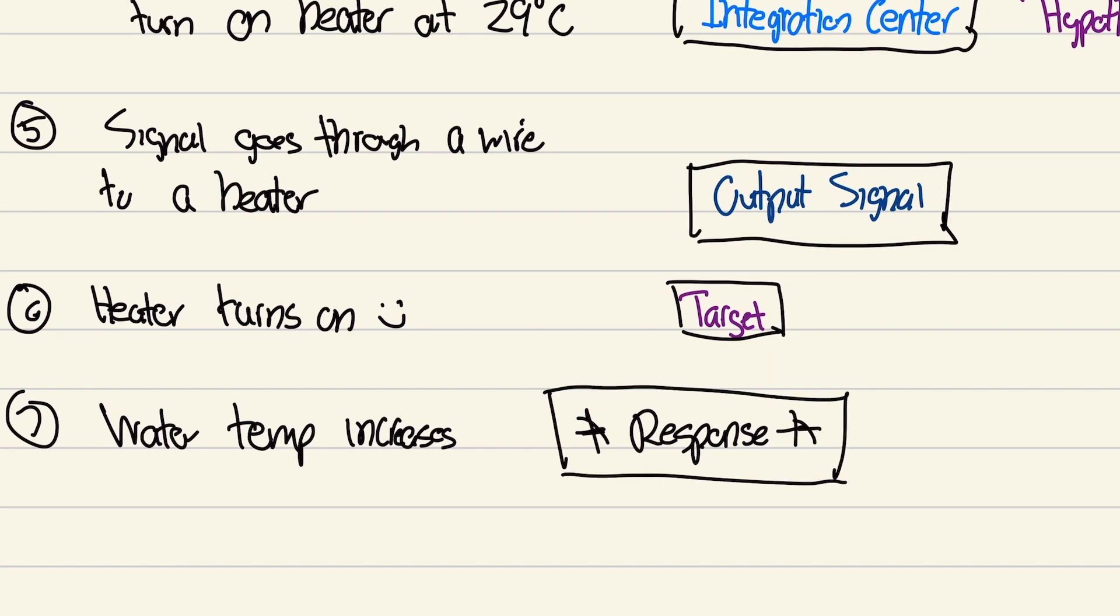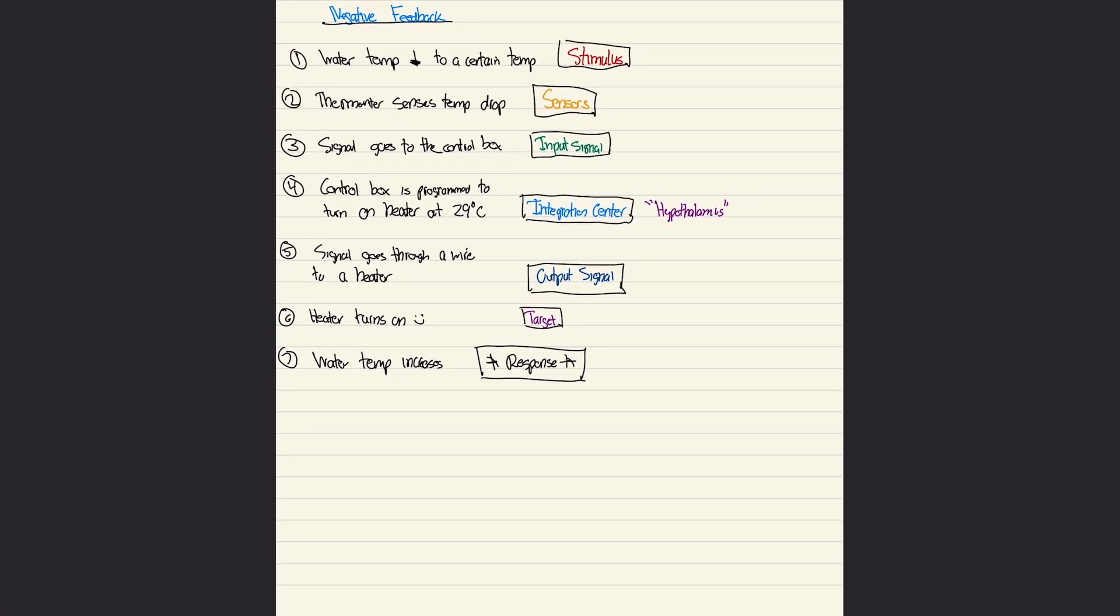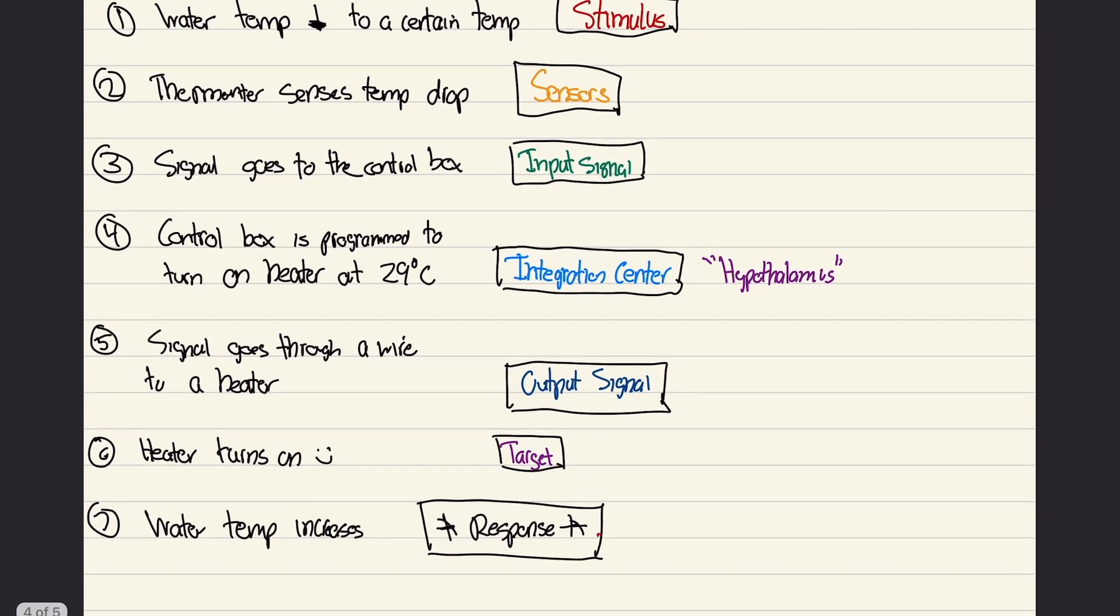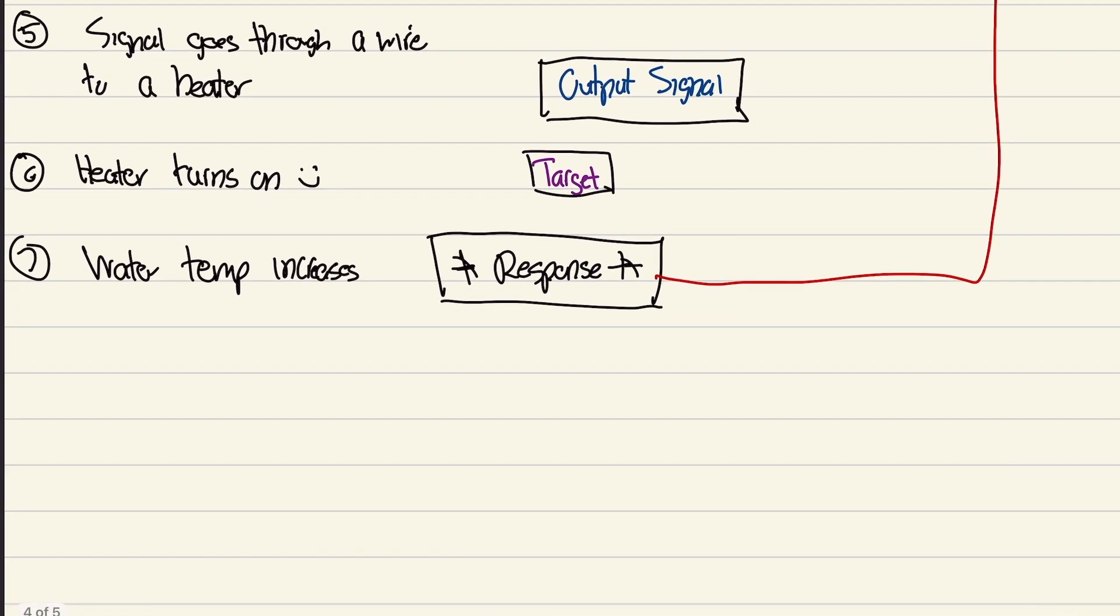So we got it. Water temperature is now warmer. How does the negative feedback come into play? Well, if the water temperature is hot, this means it's not cold. So if it's not cold, then the thermometer does not detect the temperature drop because it's hot, it's not cold. It does not signal to the control box.